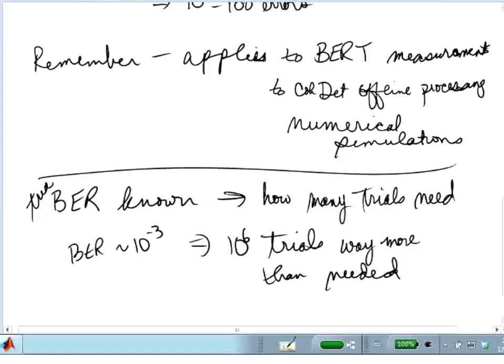If you knew the bit error rate, you would know how many trials to run, but of course, you're running these trials because you don't know the bit error rate, so it's not really useful, except it will help me try to explain where this rule of thumb of ten to a hundred counts comes from.